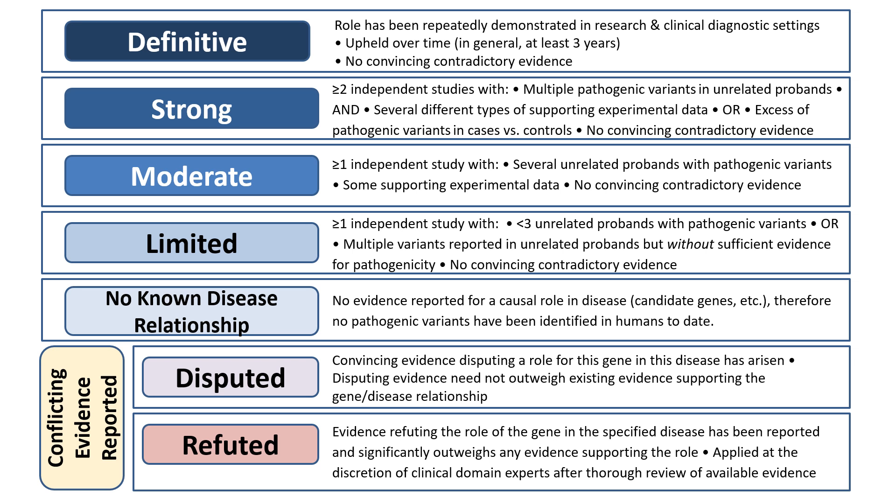As a reminder, these terms do not reflect the effect size or relative risk attributable to variants in a particular gene — for example, a definitive gene disease association does not imply that variation in that gene confers 100% penetrance of the phenotype. The classifications take into consideration both evidence for and evidence against a gene disease relationship. For gene disease pairs with evidence supporting the relationship, the classifications range from definitive to limited. Definitive gene disease pairs are those with considerable supporting evidence — genetic evidence with or without experimental — that have been replicated and upheld over time, in general at least three years. If a gene disease pair has considerable evidence but has only been newly discovered within the last three years, it'll be classified as strong. Once more time has passed and no contradictory evidence has emerged, then the classification can be moved up to definitive.